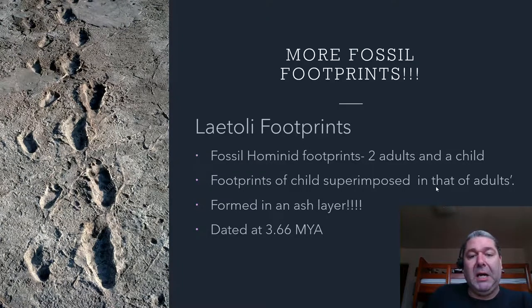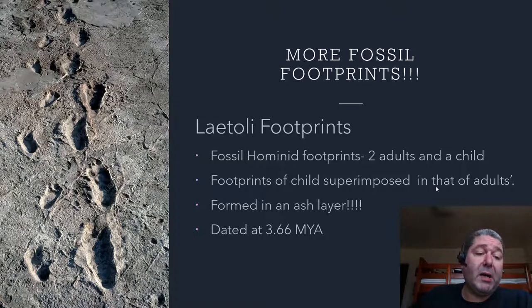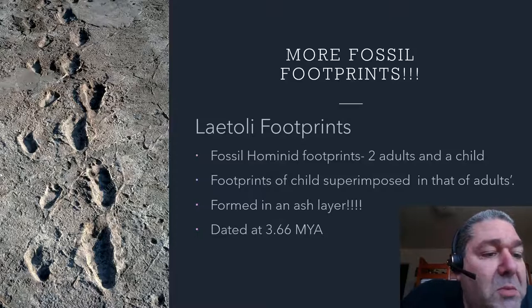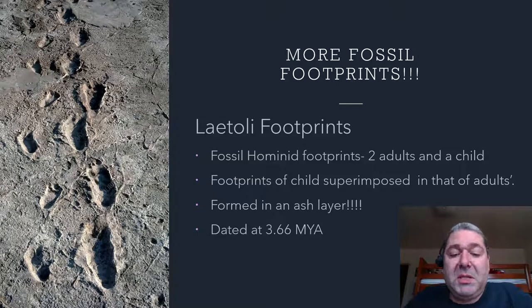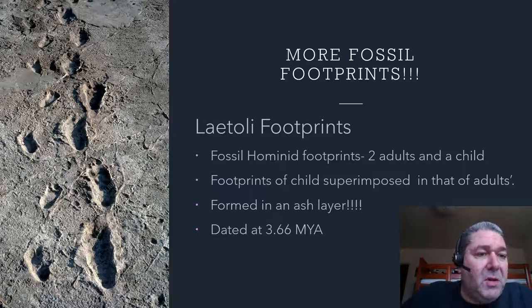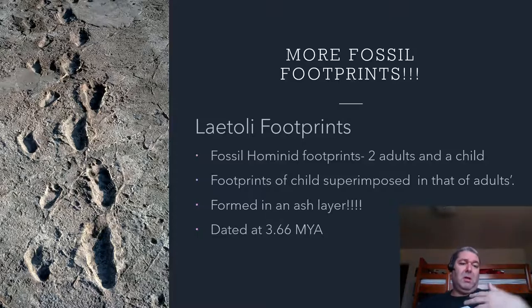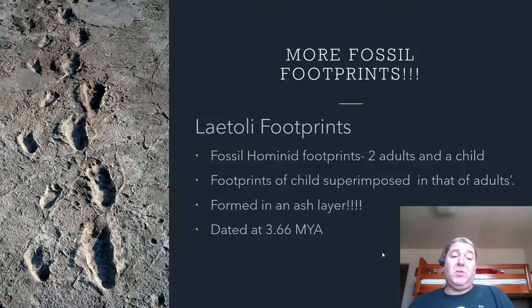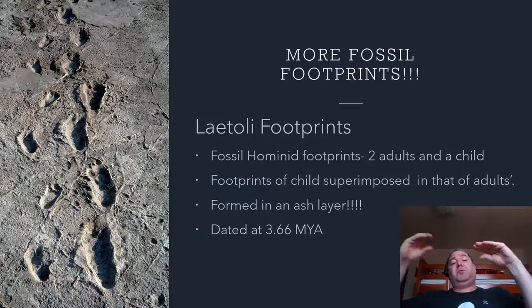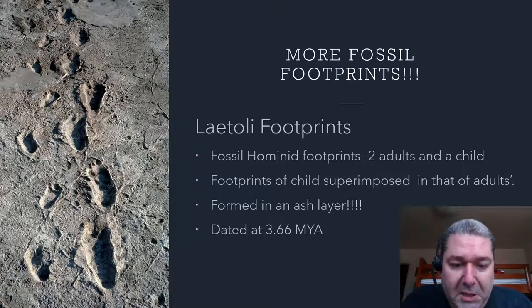Moving to a more controversial one: the Laetoli footprints — fossil hominid footprints. Two adults and a child, walking together. The footprints of the child are often superimposed in the footprints of the adults, which is what kids do. They were formed in an ash layer dated at 3.66 million years ago, and the footprints have been correlated to Australopithecus africanus. You can see them clearly over more than 75 feet — a ton of these footprints. The footprints we find in the layers match the fossils we find in the layers, which means these fossils were apparently already dead when they were making these footprints. Not quite sure how we're going to get around that one.